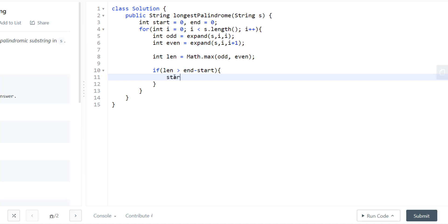The new start would be i minus length minus 1 by 2 and end will be i plus length by 2. Now, why we are doing this length minus 1?